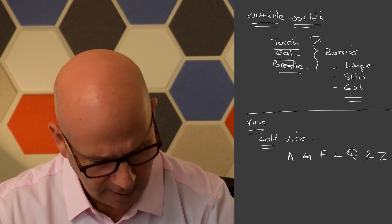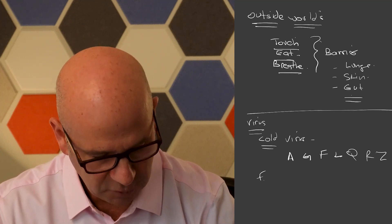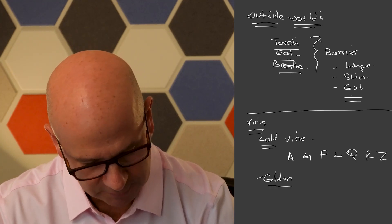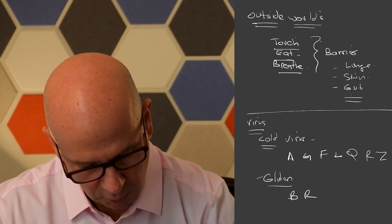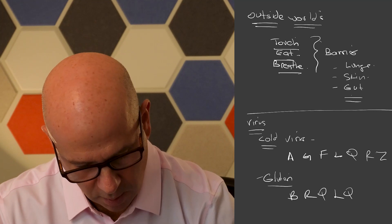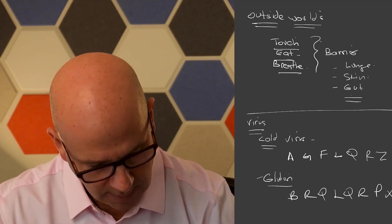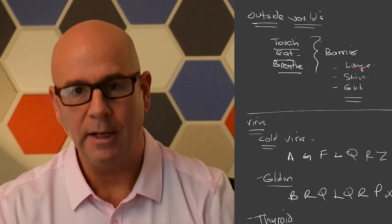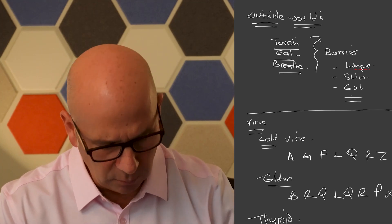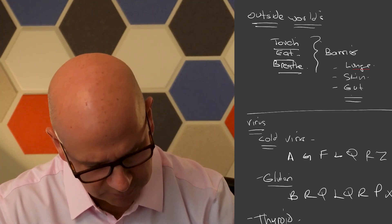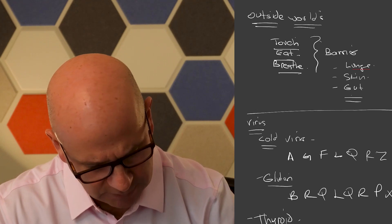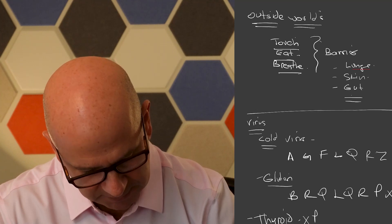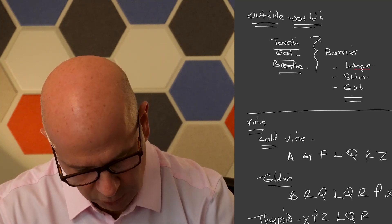And then we have a food particle. Let's just call it gluten, because that's the big bad one on the block that everybody talks about. And that's B, R, Q, L, Q, R, P, X. And then we have thyroid protein. There are 80 to 100 known autoimmune disorders. They all work the same. Hashimoto's just happens to be the most common. And this one has a protein sequence that is totally different. Let's say it's X, P, Z, L, Q, R, G, 5.